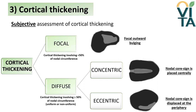According to subjective assessment, the type of cortical thickening can be defined. Cortical thickening is classified based on its extension: when it involves less than 50% of the nodal circumference, it is focal; otherwise it is diffuse. Diffuse thickening can be either concentric — when the nodal core sign is centrally placed — or eccentric, when the cortex creates a convex indentation into the medulla, displacing it towards the periphery. Diffuse cortical thickening can also be uniform or non-uniform according to the dimensional assessment.